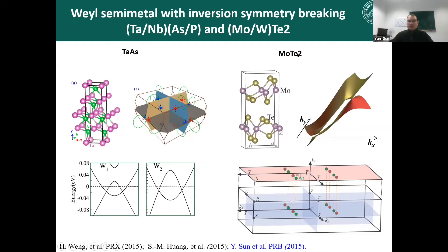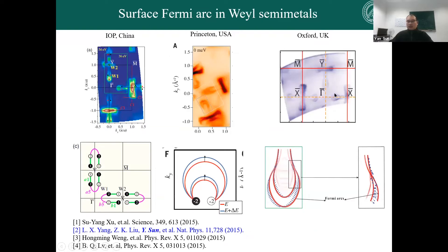The most promising compounds are the tantalum arsenide (TaAs) class and MoTe2. There are different proposed types referred to as type-1 and type-2 Weyl semimetals. Three different groups — one from IOP, one from Princeton, and one from Oxford — observed essentially the same ARPES data, but their understanding of the results are different.